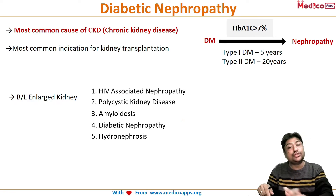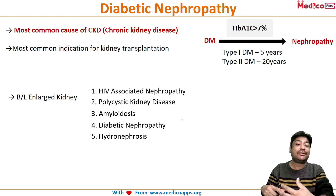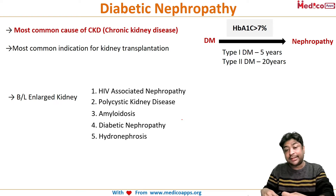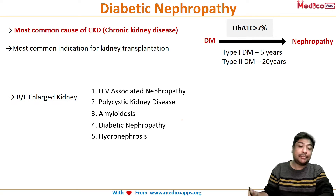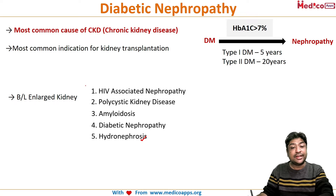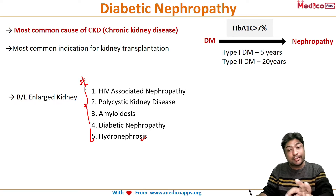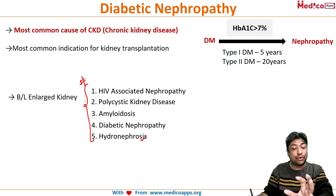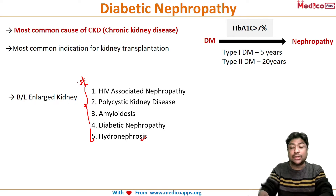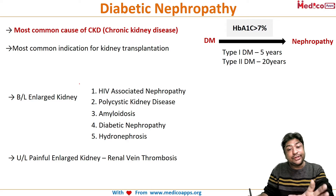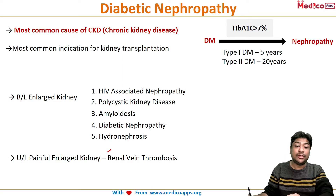The 5 most common causes of bilaterally enlarged kidney are: HIV-associated nephropathy, polycystic kidney disease, amyloidosis, diabetic nephropathy, and hydronephrosis. In all these cases the enlargement is painless — these are all painless bilaterally enlarged kidneys. On a side note, the cause of a unilateral but painful enlarged kidney is renal vein thrombosis.